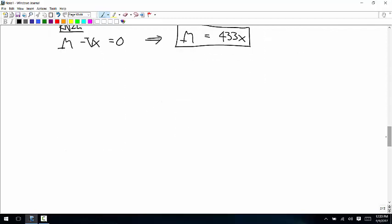And then the moment equation, our about point is the left end, so there's no moment produced by RA. So we just have M minus Vx is equal to zero. So M is equal to Vx, or M is equal to 433x.